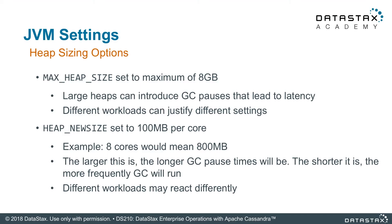Max heap size determines how large your JVM heap will be. Eight gigabytes is a good baseline. Be careful not to tune this value up too high, as the operating system still needs enough room to operate as well. One disadvantage to large heaps is garbage collection pauses. The larger the heap, the less often the garbage collector has to kick in, but when it kicks in, it will take much longer to complete depending on the type of garbage collection you're using.